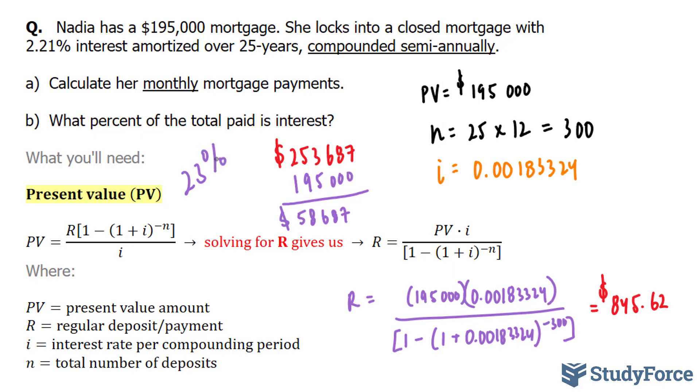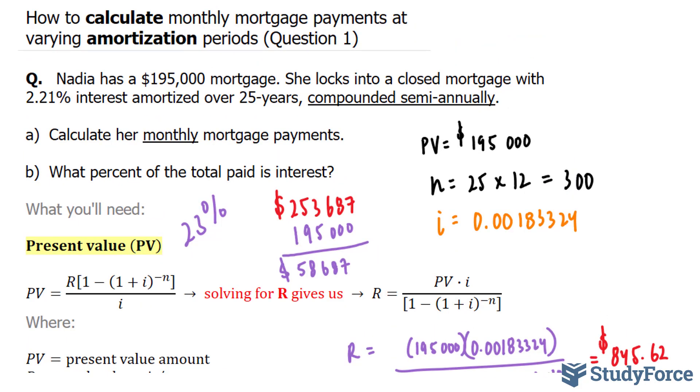So, of the 253,000 dollars paid, 23% of that went to the loaner's pocket. And so there you have it. That is how to calculate monthly mortgage payments at varying amortization periods.